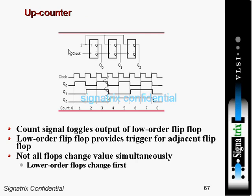An up counter counts from zero to its maximum value. The count signal toggles the output of the low-order flip-flop — when T is one, your output will toggle. The low-order flip-flop provides the trigger for the adjacent flip-flop, and not all flip-flops change value simultaneously; lower-order flip-flops change first.